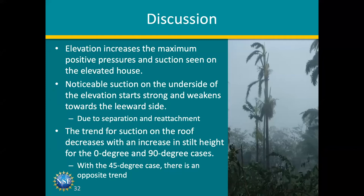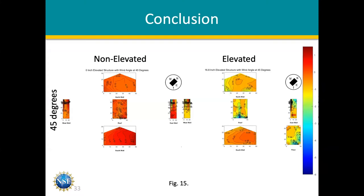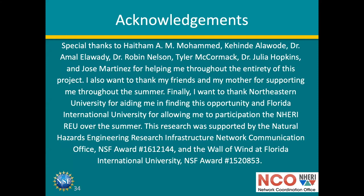In conclusion, elevation increases the maximum positive and negative pressure on structures. There is separation and reattachment on the floor, which is a problem — just as suction on the roof can pull it off, the same can now happen to the floor. This was a first attempt at creating Cp values for engineers designing these houses, but more research is needed at more angles, especially between zero and 90 degrees. I'd like to thank my mentors Haitham Mohammed, Dr. Amal Alawadi, Dr. Robin Nelson, Tyla McCormick, Dr. Julia Hoppins, and Jose Martinez, as well as Northeastern, FIU, and NSF.